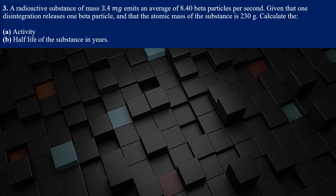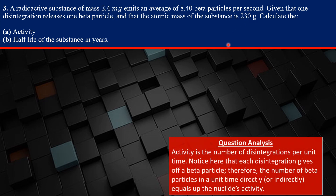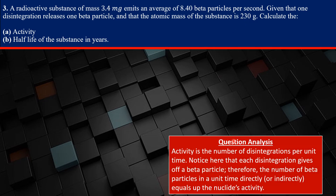Hey guys, thank you so much Bujet for reading the question. So let's get right into solving it. The first part asks what the activity of the radioactive sample is. You have to recognize what activity is — activity is basically the number of disintegrations per unit time. Now, the question states that each disintegration gives up one beta particle. So you recognize that the number of beta particles per unit time is equal to the activity of the sample. And how many beta particles are there per unit time? 8.40 beta particles per second — so that's the activity. We've done that, as shown down here under the question analysis.